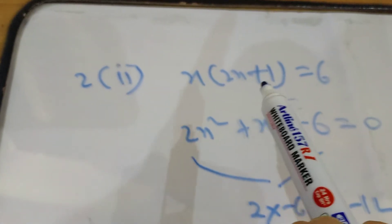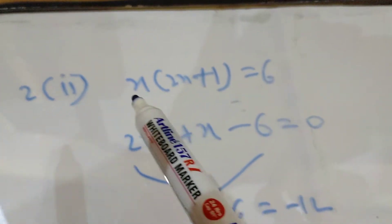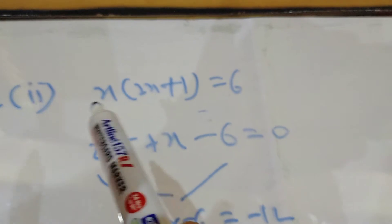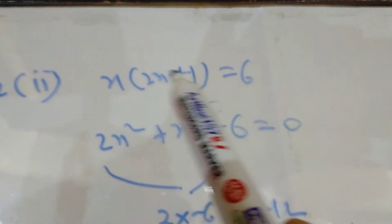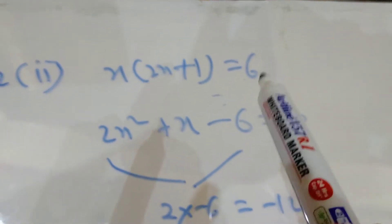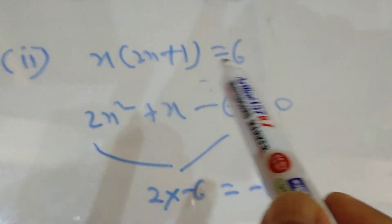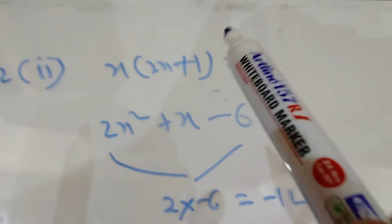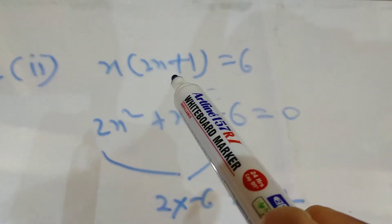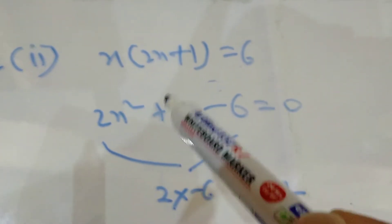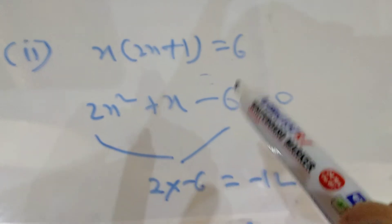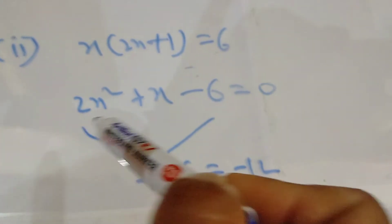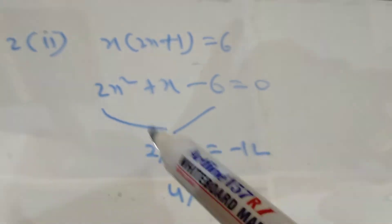Now look at another part of this question: x(2x + 1) = 6. Students, note this down — this is a very important question. We cannot directly apply the zero product rule because the product of these two factors is not equal to 0. So we cannot say x = 6 and 2x + 1 = 6; that will give the wrong answer. We must multiply inside the bracket: 2x² + x.